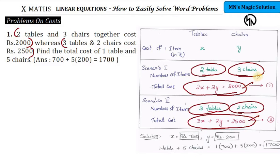We have to solve these two equations by a suitable method. The answer is 700 and 200 respectively. The final question asks for the total cost of 1 table and 5 chairs. That's 1 times X which is 700, plus 5 times Y which is 5 times 200, giving a total of 1700. Always mention units. Since the question uses rupees, the final answer should be Rs. 1700.